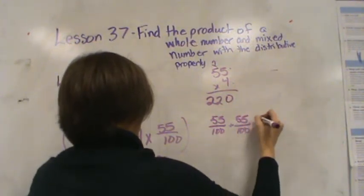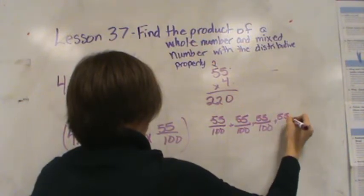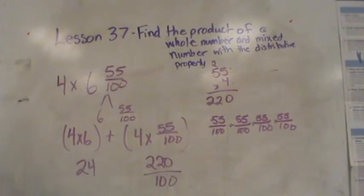So I have 220 hundredths. If I counted by 55 hundredths 4 times or did 55 hundredths plus 55 hundredths plus 55 hundredths plus 55 hundredths, I'd get 220.